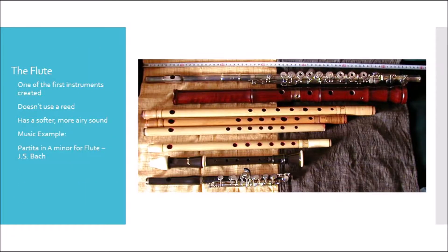The first instrument we're talking about today is the flute. The flute was one of the first instruments created, originally made out of wood, and is now currently made out of metal. In the picture on this slide, you'll note some of the evolution of the flute, starting from the third from the bottom and moving up to where we added keys and made the flute out of metal. The flute doesn't use a reed, but instead the player blows air across the tone hole to create sound.